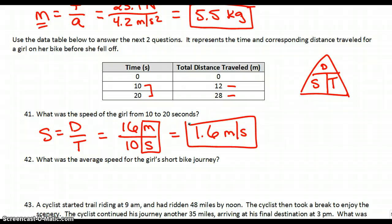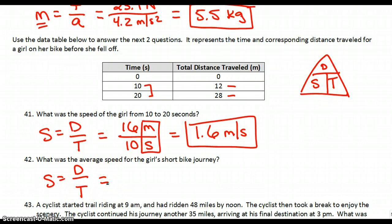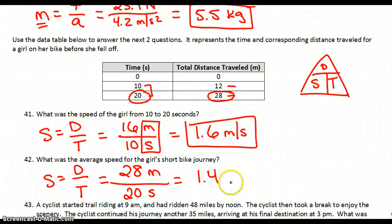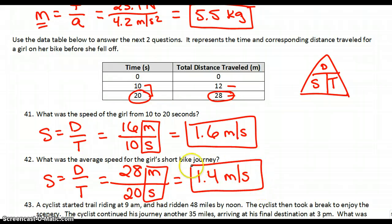42: what was the average speed for the girl's short bike trip? Average speed is still the same formula — distance over time — but now we look at all the data. Her total distance was 28 meters and the total time was 20 seconds. That gives you 1.4 meters per second.